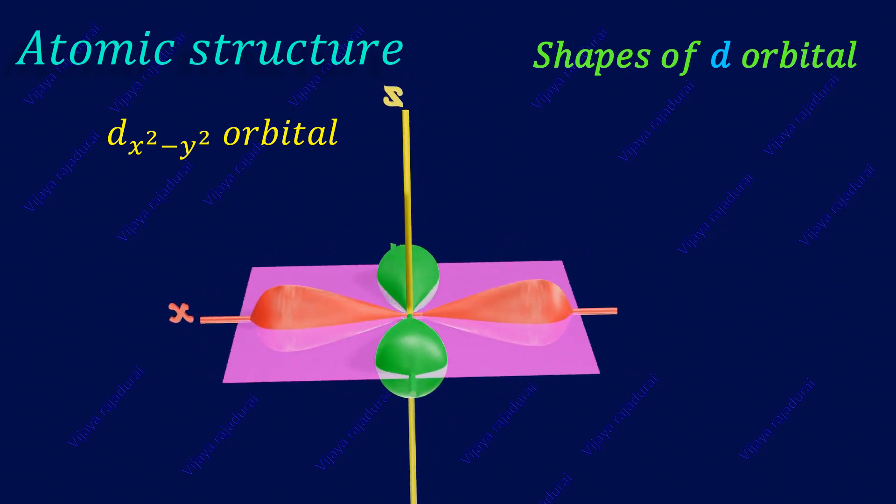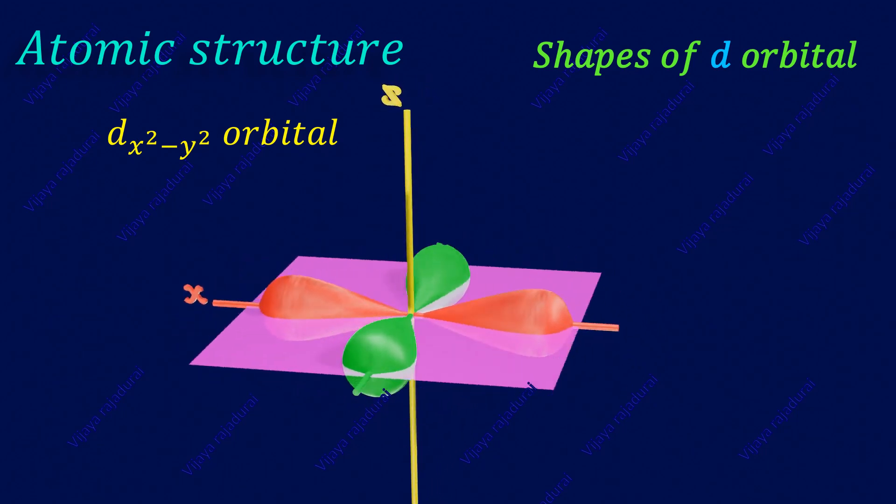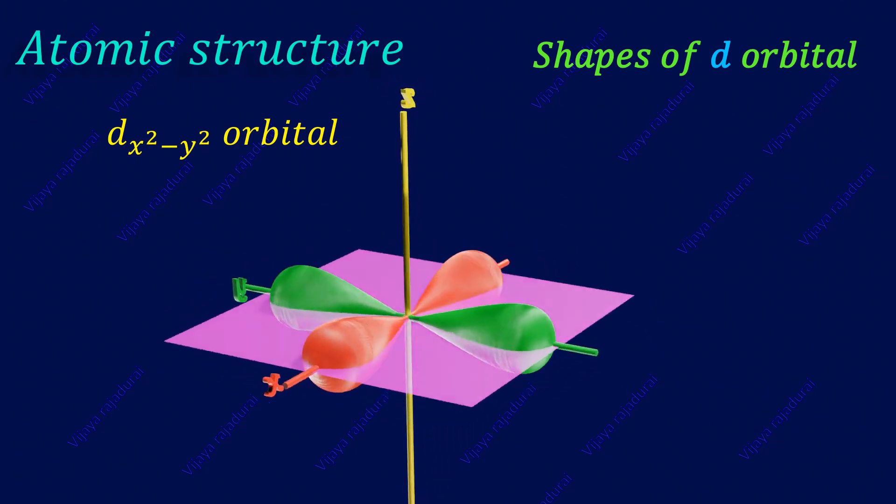In the dx² - y² orbital, the lobe is oriented along the axis, along the x and y axis.